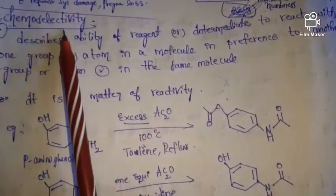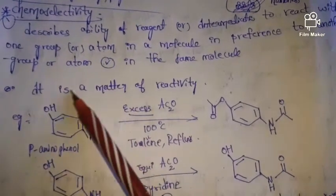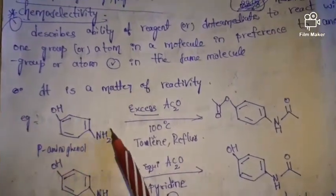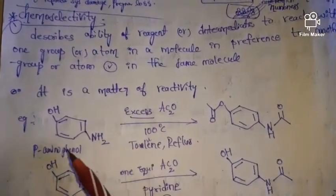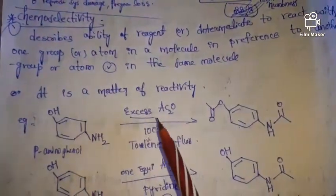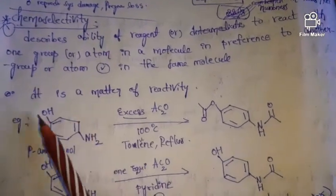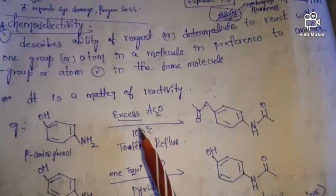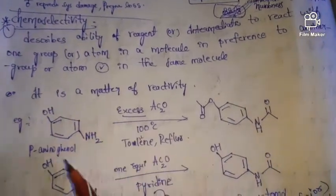Chemoselectivity is the ability of the reagent to react with one group or atom. In this molecule, if we observe, two groups are present: hydroxyl groups and amine groups. So chemoselectivity means the ability of the reagent or intermediate to select or react with one group in preference to another group present in the molecule.